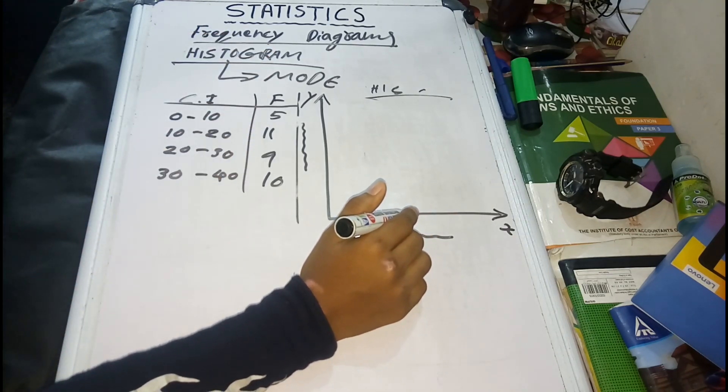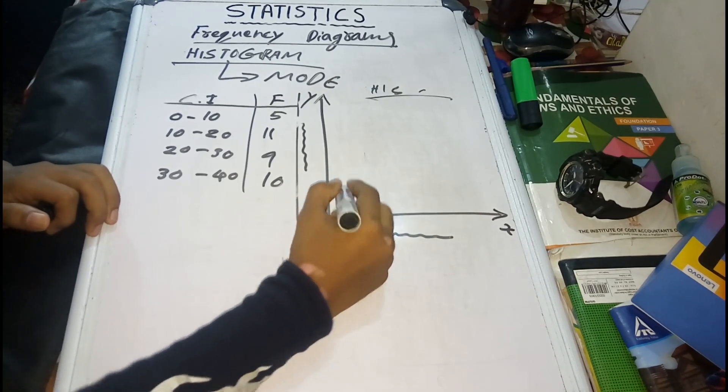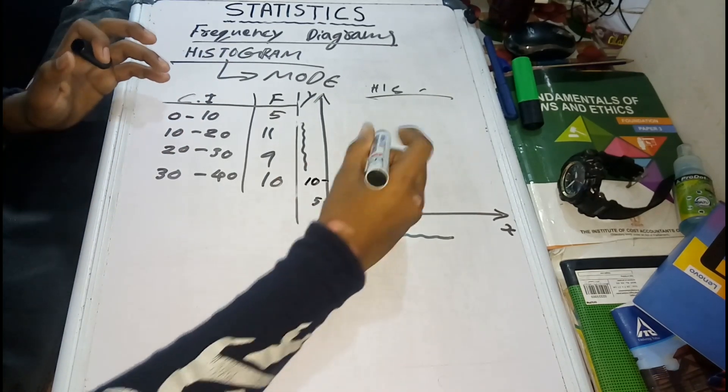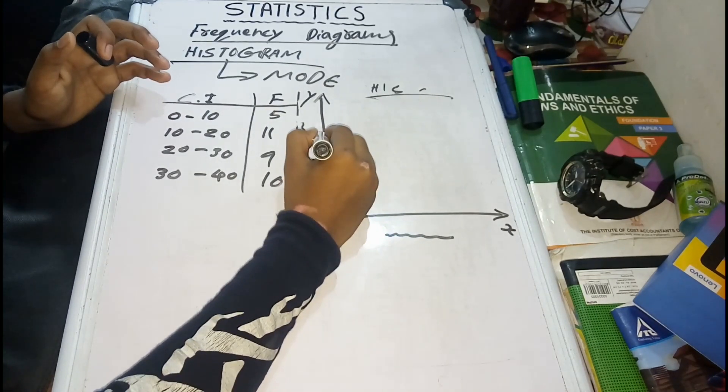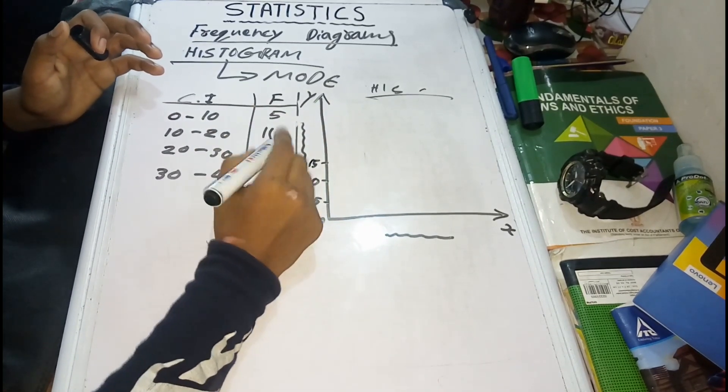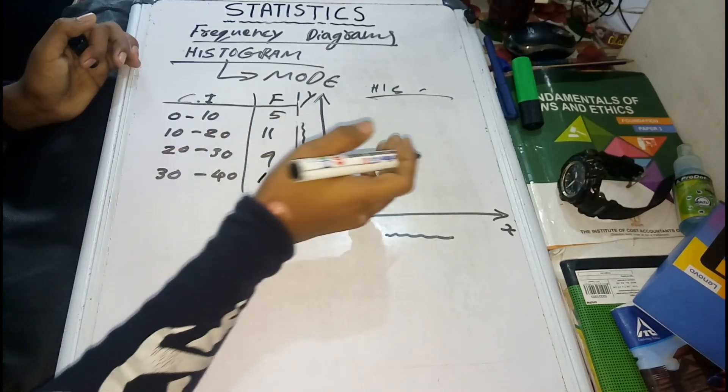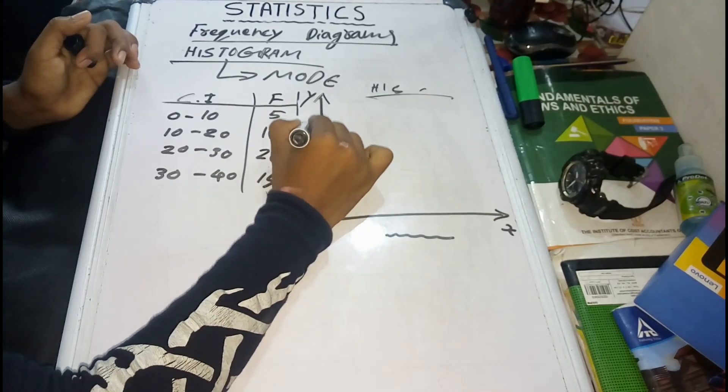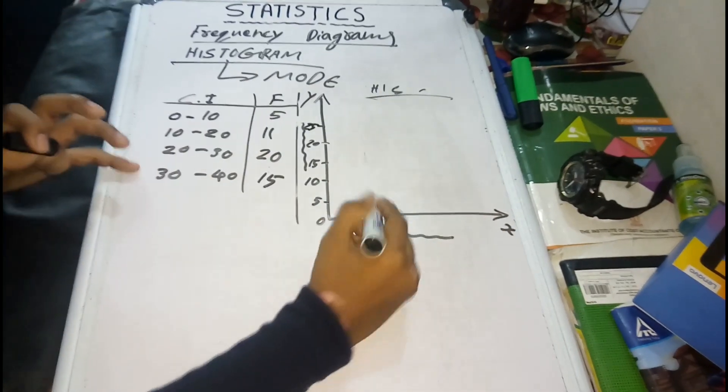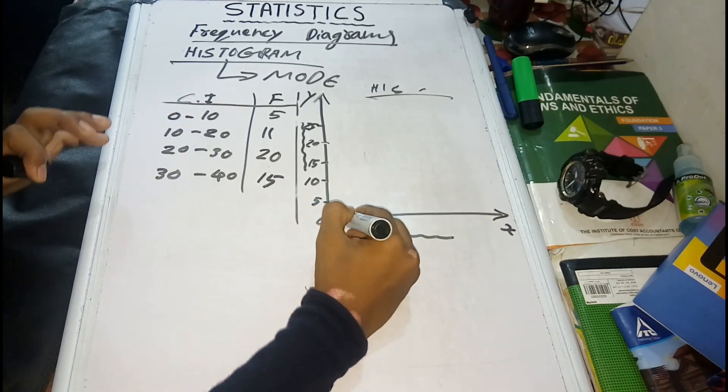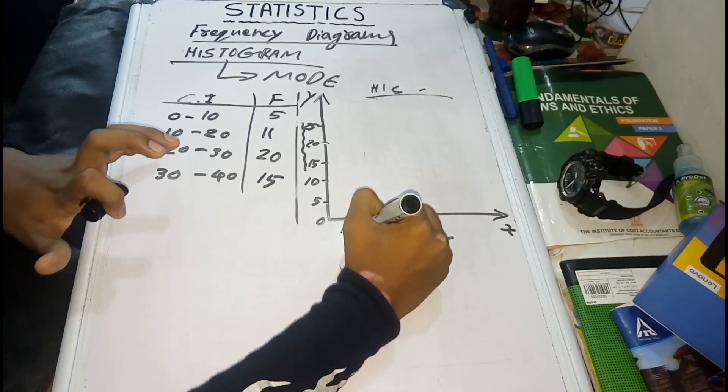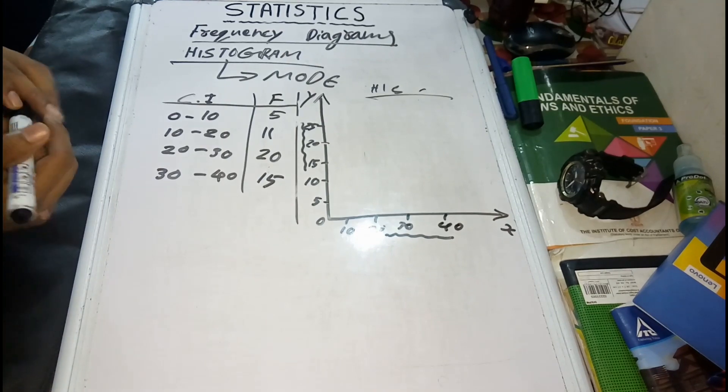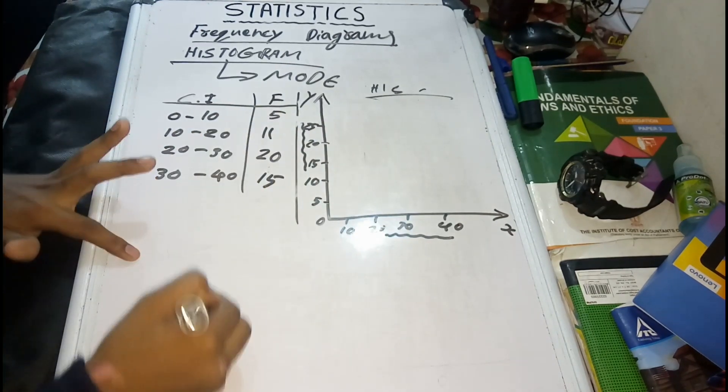Then frequency values. 0 to 10 values: 0, 5, 10, 15, 20, 25. Then 25. Next class: 0, 10, so 10, 10, 20, 20, 30. Okay, values. Maximum maximum just like so.